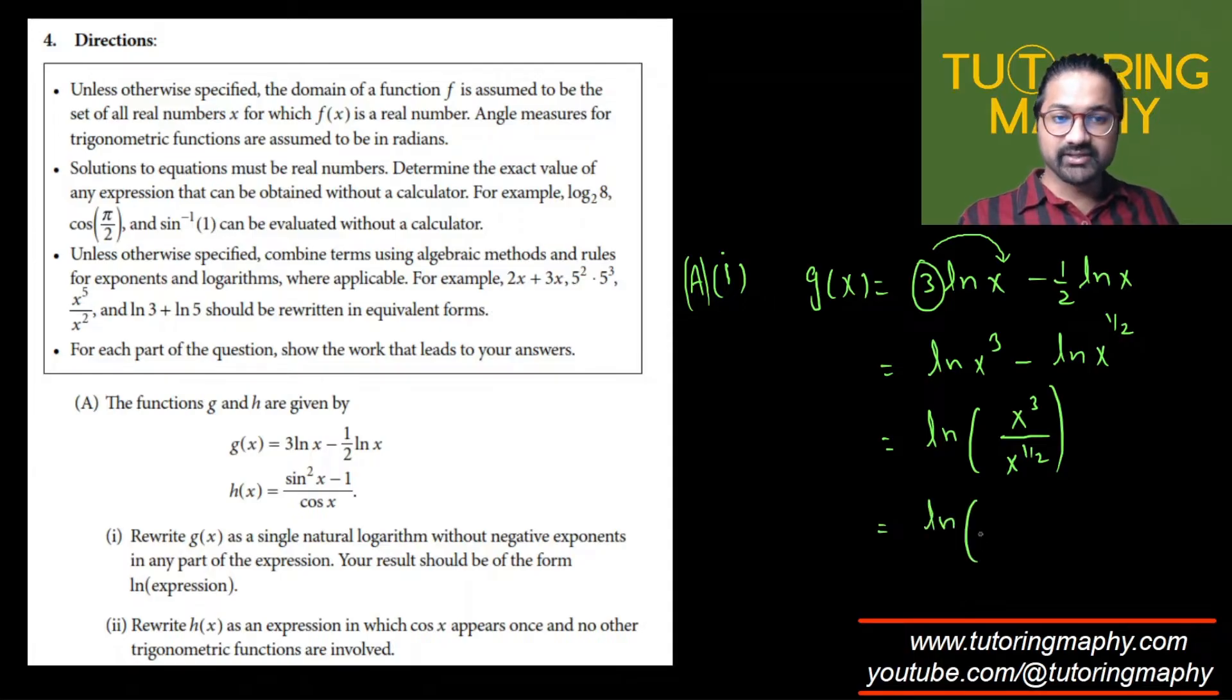This is how we write as a second step. Finally, since they need only a single expression, we can definitely simplify these two expressions because the base is same. If we notice carefully, the base of both these exponents is x and they are in a division. So when such a case happens, the power gets subtracted. So this is going to look like x raised to 3 minus one half.